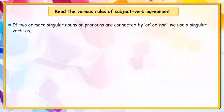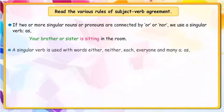If two or more singular nouns or pronouns are connected by 'or' or 'nor', we use a singular verb. For example: 'Your brother or sister is sitting in the room.'